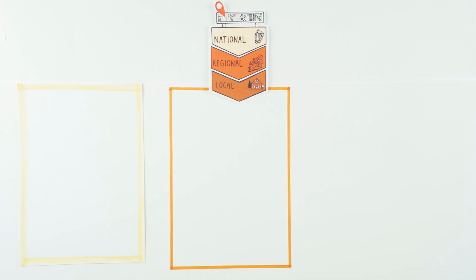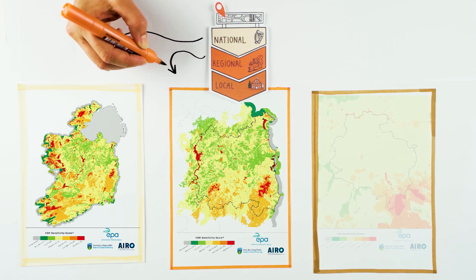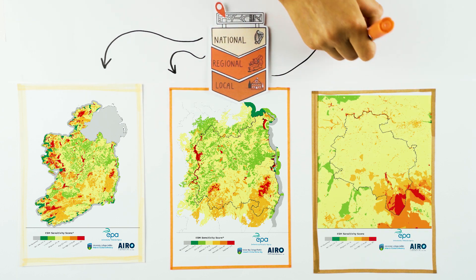In practice, the ESM tool has already informed Ireland's National Planning Framework and has been used by the regional planning assemblies to develop their own strategies.